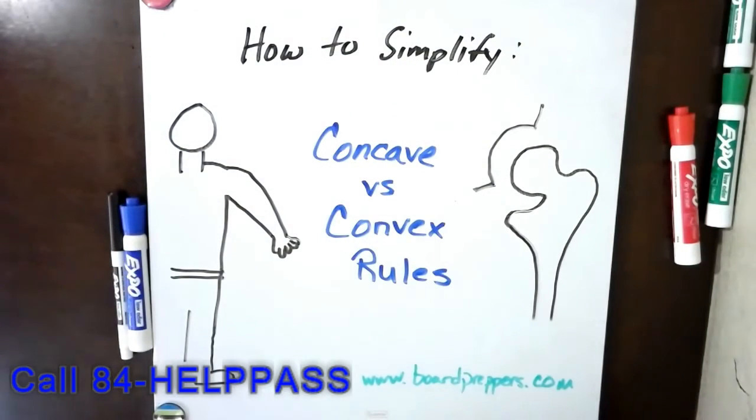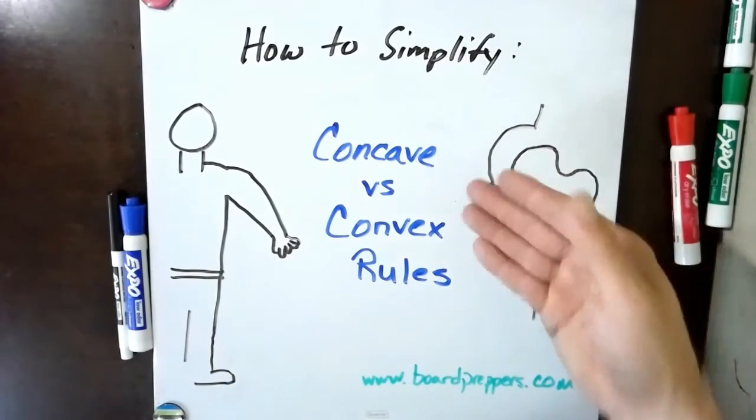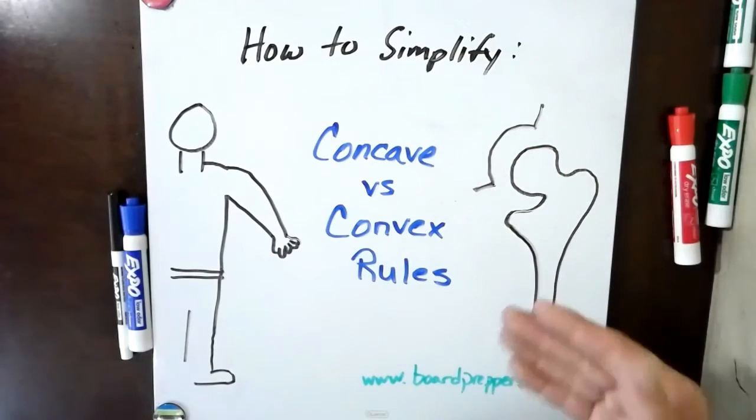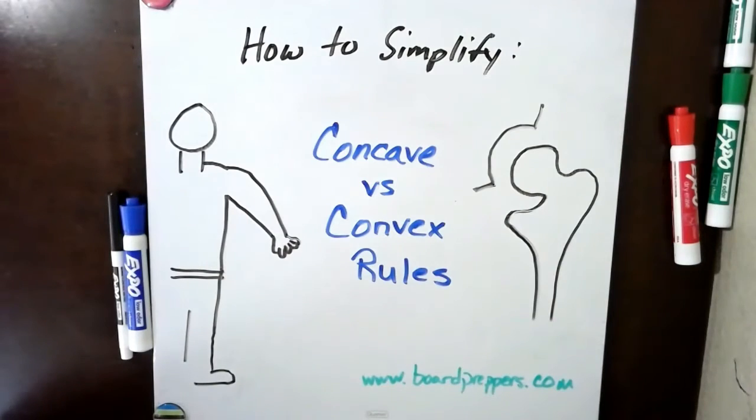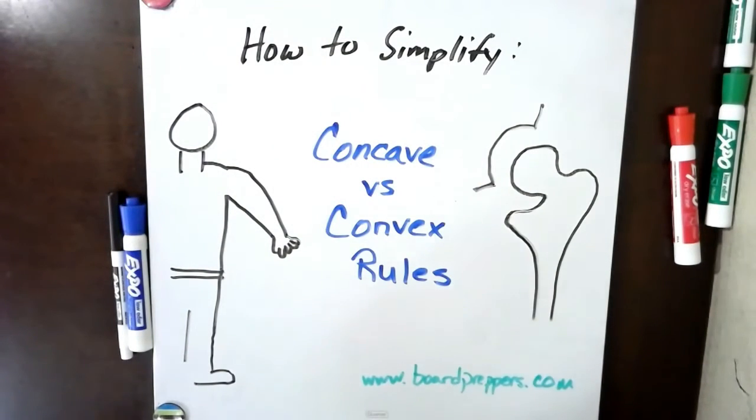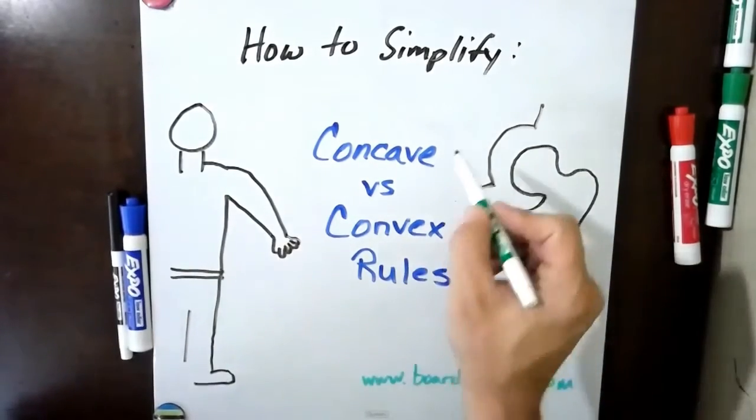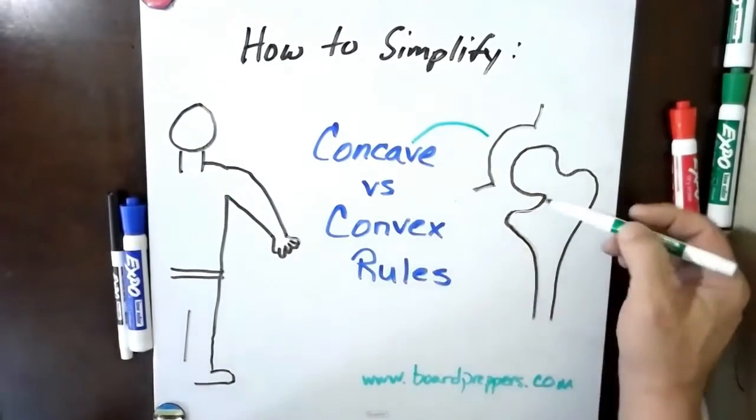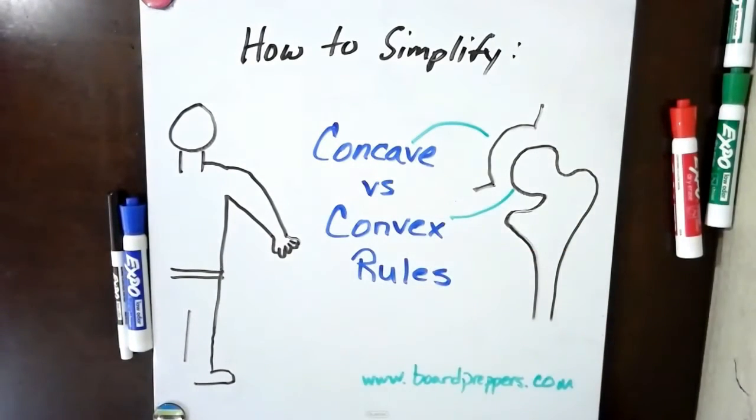What is concave, what is convex? And I have some drawings on the board that we'll use. So here you'll see, let's just call it the glenoid fossa and then the humerus. So every joint when referring to concave or convex rule has two surfaces involved, so we're going to use this as an example. So the glenoid fossa is a concave surface and the head of the humerus is a convex surface.